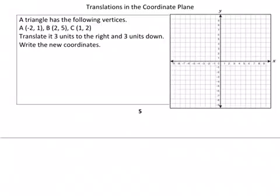Now we're going to use translations in a coordinate plane. The triangle has the following vertices: A, B, and C. So since we have these three vertices, which are points or corners of a triangle, we're going to plot them. A is at (-2, 1), and I'm going to label it A. B is at (2, 5), and you label it B. And C is at (1, 2), and you label it C. Make sure you connect the dots to make that triangle.